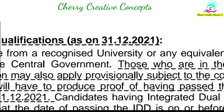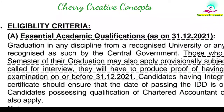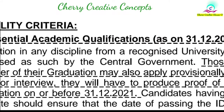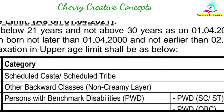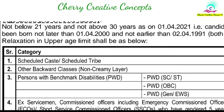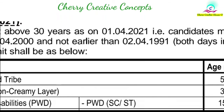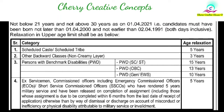Next, let's look at the eligibility criteria. You must have completed graduation by December 31st, 2021. Graduation must be complete. Final year candidates can also apply by the date. The cutoff date is April 1st, so calculating backwards, candidates must be a minimum of 21 years and a maximum of 30 years. There are age relaxations for SC, OBC, and PWD candidates.